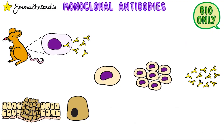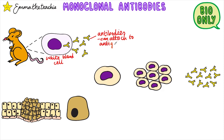In a previous video we covered how antibodies work. These are proteins made by white blood cells that can attach to antigens. Antigens are proteins often found on the surfaces of cells. Today we're looking at how large amounts of antibodies can be made in the lab — these are monoclonal antibodies.